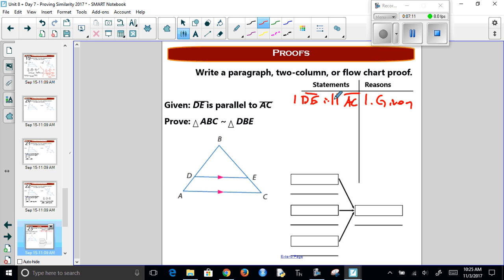We always write the given information in here. If that's true, then we know angle D is congruent to angle A, because those are corresponding angles.